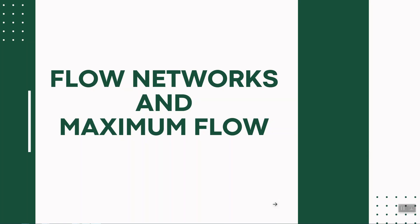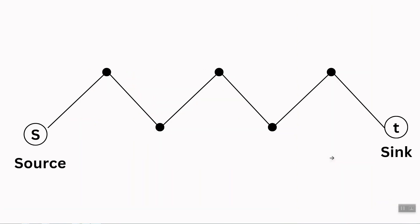A flow network is a directed graph where things flow or move from one place to another. Things or materials flow from one vertex identified as the source to another vertex identified as the sink. The source is the place where materials get produced and the sink is the place where materials get consumed.